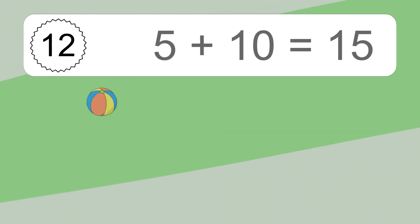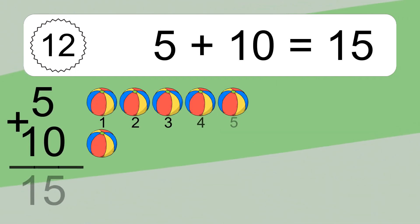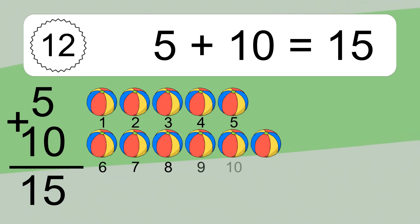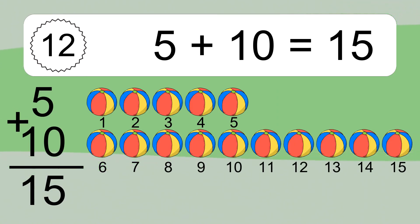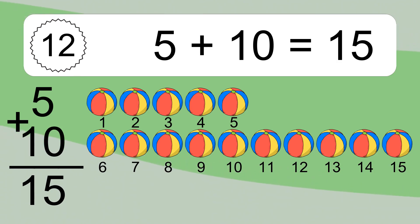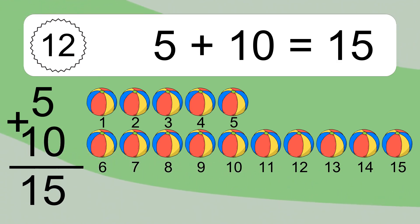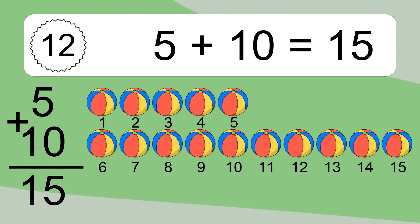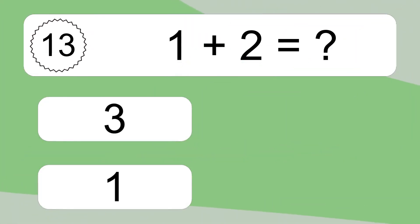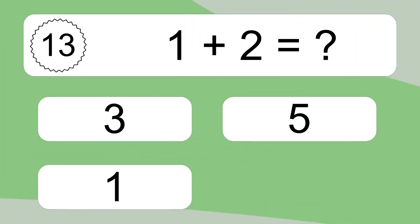5 plus 10 equals what? 5 plus 10 equals 15. Let's count it. 1, 2, 3, 4, 5, 6, 7, 8, 9, 10, 11, 12, 13, 14, 15.